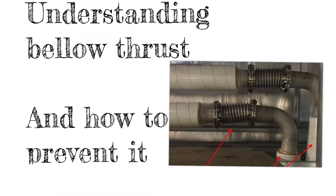Hi friends, welcome back to my channel. Today I will be discussing bellow thrust. Here you can see an unrestrained expansion joint, or bellow in other words—it's a metallic bellow. We are going to see a very interesting and important topic called bellow thrust. This is a very important topic in designing piping systems.